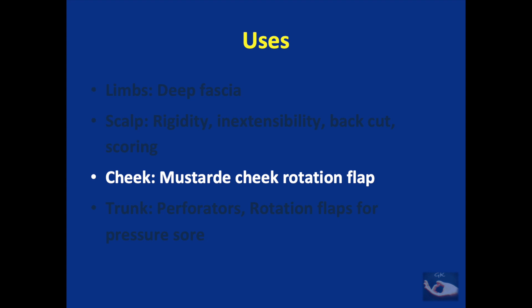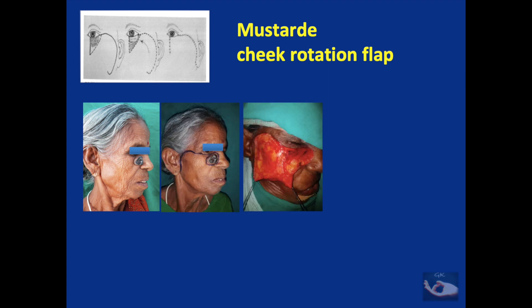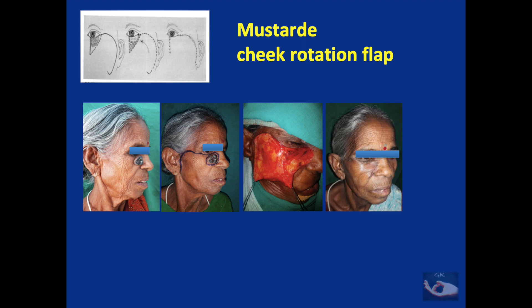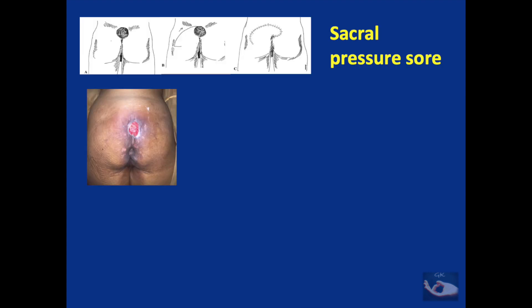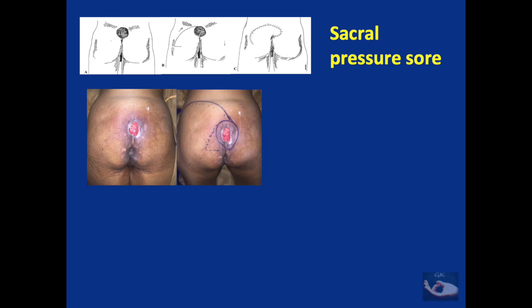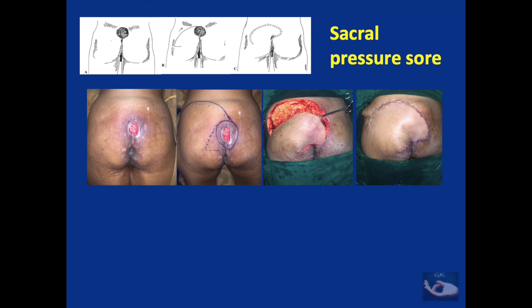The rotation flap can be done on the cheek, with the best example being the Mustardé cheek rotation flap. In a lady with a basal cell carcinoma, the rotation flap was marked, raised, and inset, with well-hidden scars along the natural folds — a key advantage, especially in elderly individuals. The rotation flap can also be used on the trunk, noting perforators that can be used to perfuse the flap. Here it is being used for resurfacing a sacral pressure sore: the defect is triangulated, the flap raised and rotated, and final inset completed.